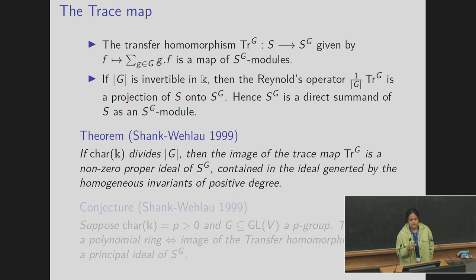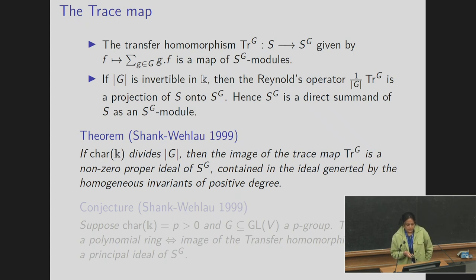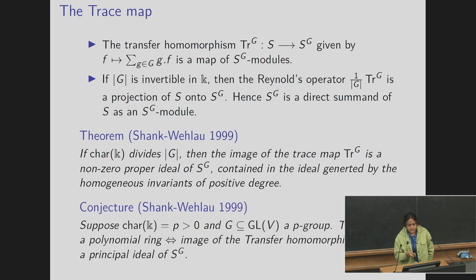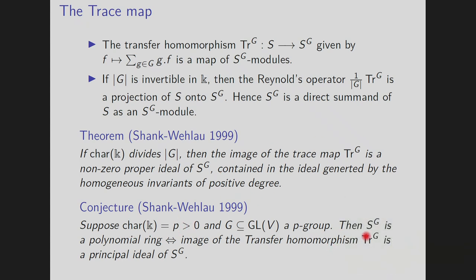Serre and Noylau proved in 1999 that in the modular situation the image of the trace map is a non-zero proper ideal; of course it is contained in the homogeneous ideal generated by the homogeneous invariants of positive degree. After several computations they conjectured that when the characteristic of K is p and G is a p-group, the invariant ring is a polynomial ring if and only if the image of the transfer map is a principal ideal.